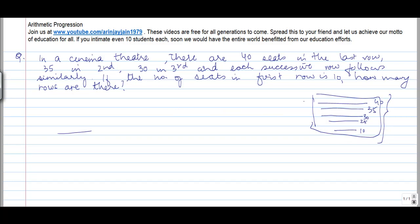So we are told to find out how many rows are there. If I were to see this number of seats, these are basically 40, 35, 30, 25, into 10.